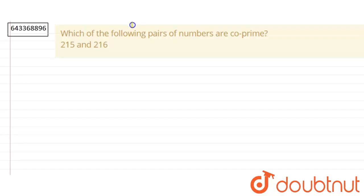In this question, we have to find whether the following pair of numbers, that is 215 and 216, are co-prime or not.